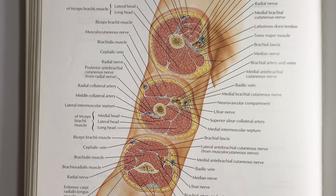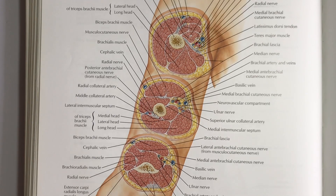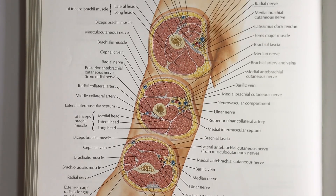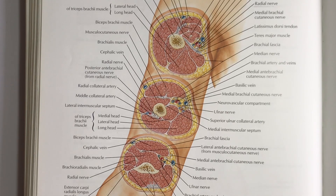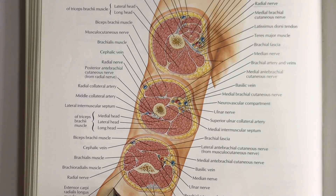In the cubital fossa, the bicipital aponeurosis lies superficial to the brachial artery. Superficial to that lies the median cubital vein, which connects the cephalic vein and the basilic vein.